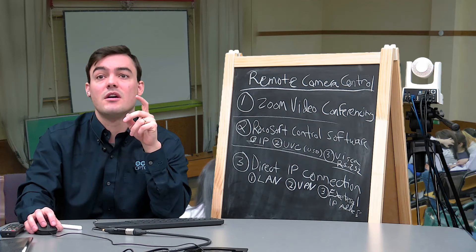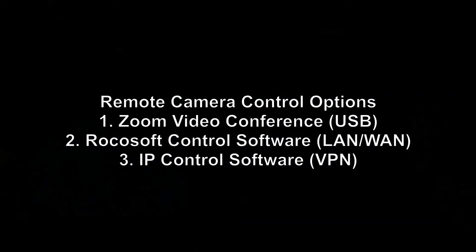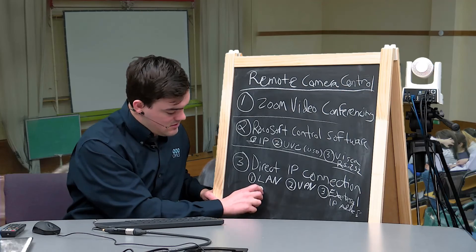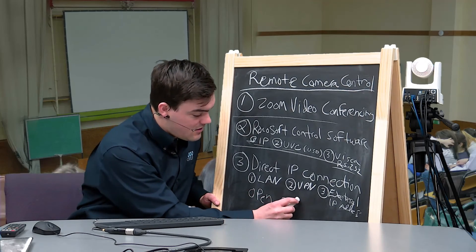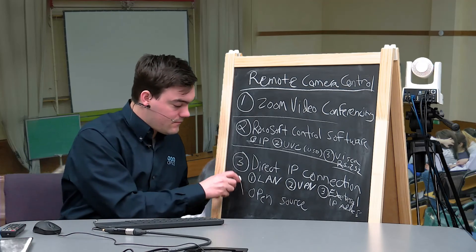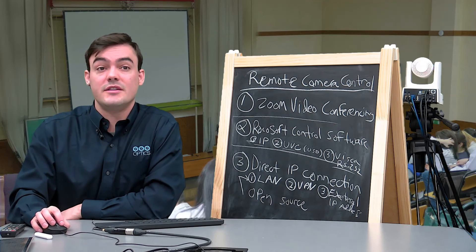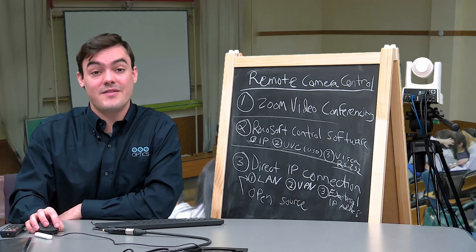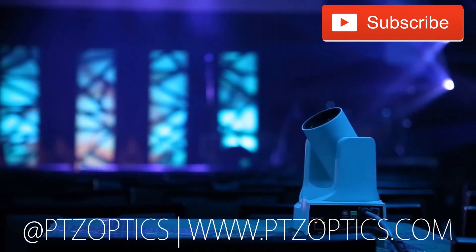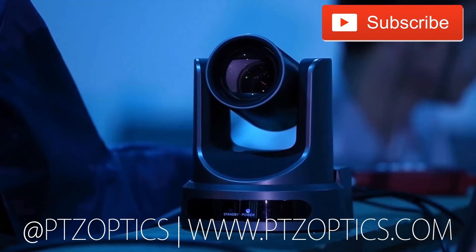Stay tuned for our next three videos: video one will cover Zoom Video Conferencing; video two will cover Rokosoft control software over a local area network or wide area network using an external IP; and video three will show our IP control software. There's also a free, open-source control software available for download from our site for use on the local area network. Thanks for tuning in — click to watch another PTZOptics video, subscribe, and join our live show Fridays at 11 a.m. Pacific / 2 p.m. Eastern.